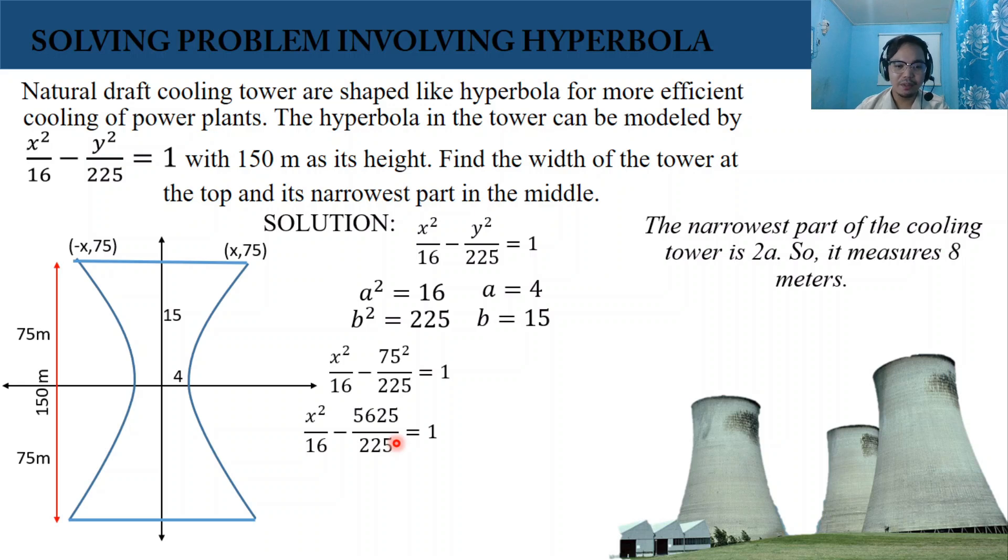5,625 can be divided by 225, and their quotient is 25. So we have x squared over 16 minus 25 equals 1. We're going to find the value of x.